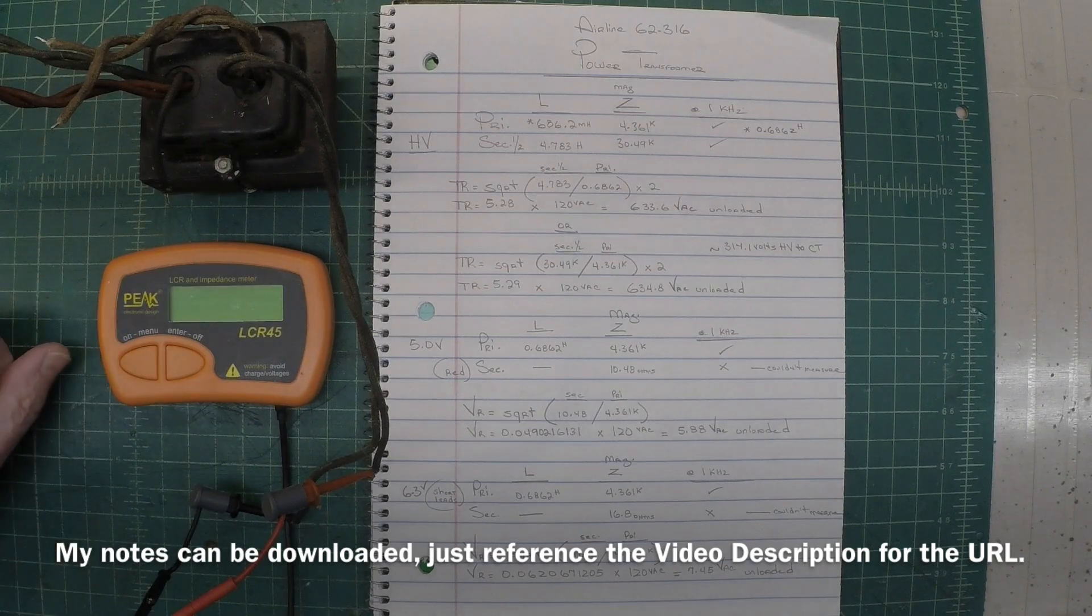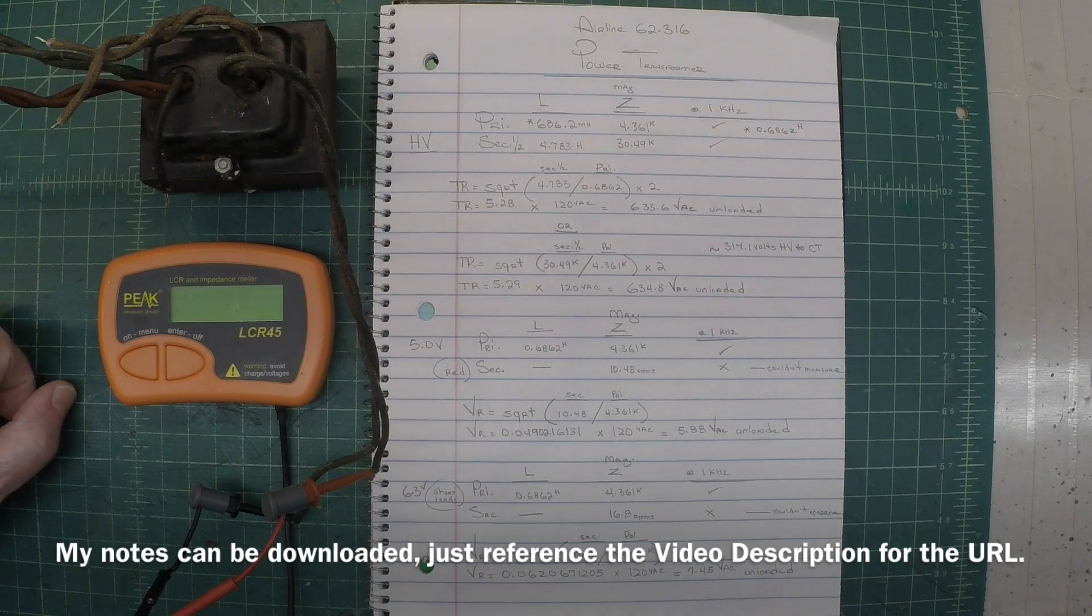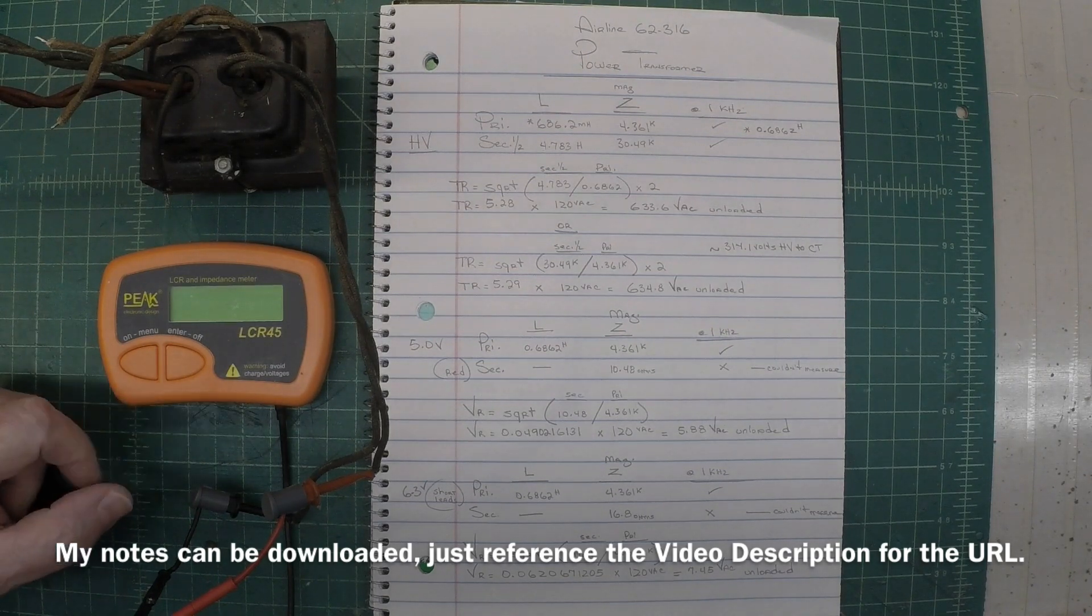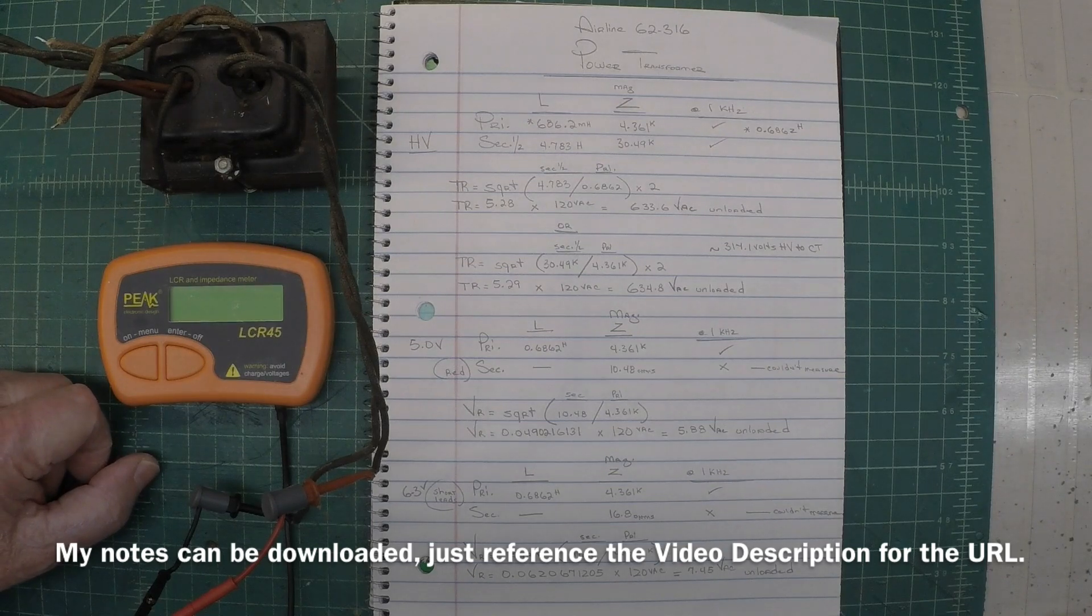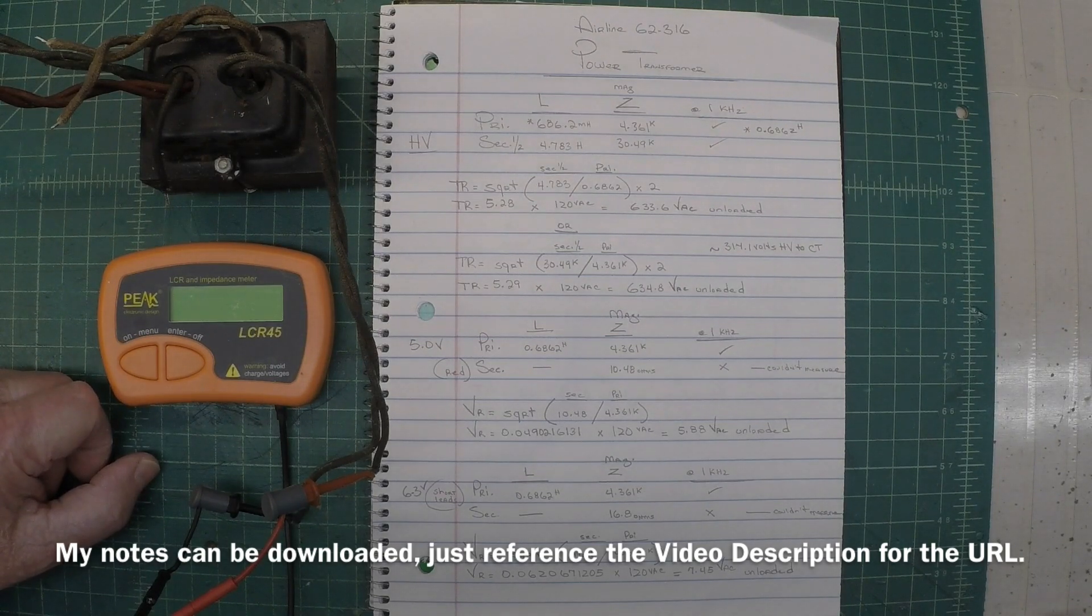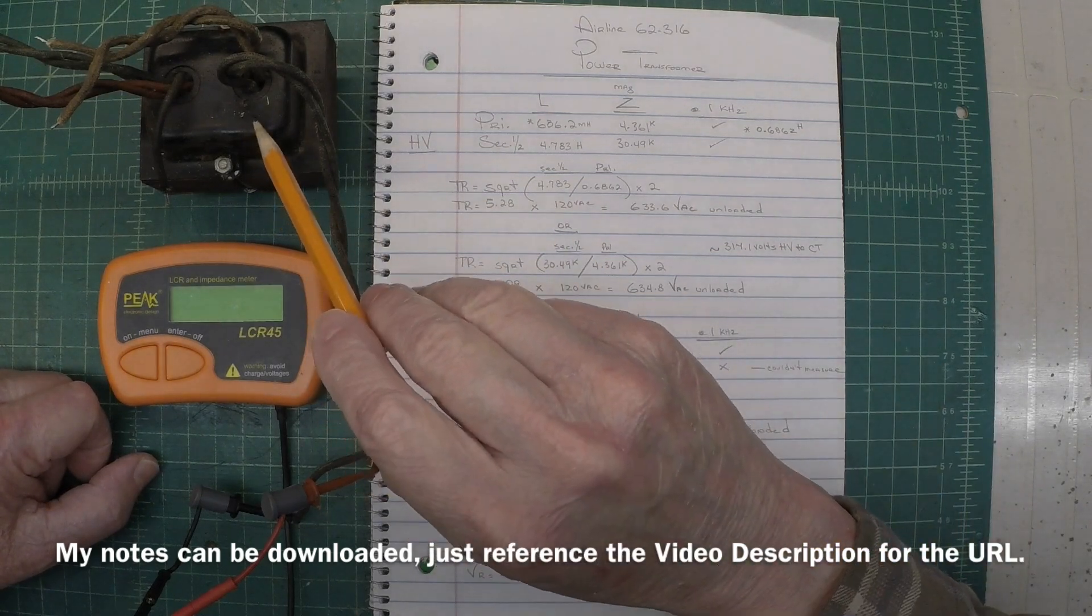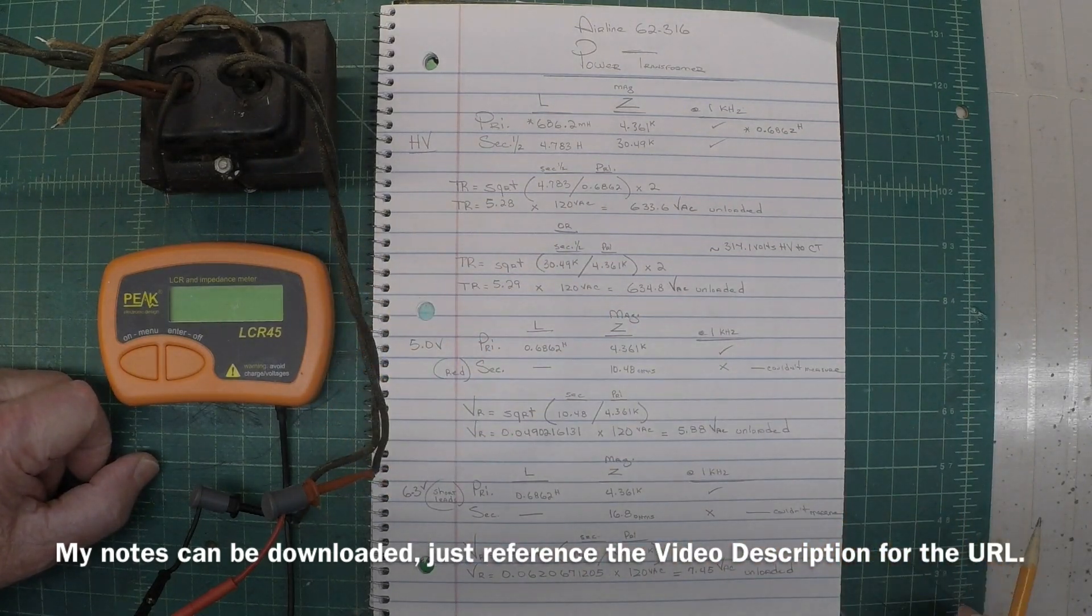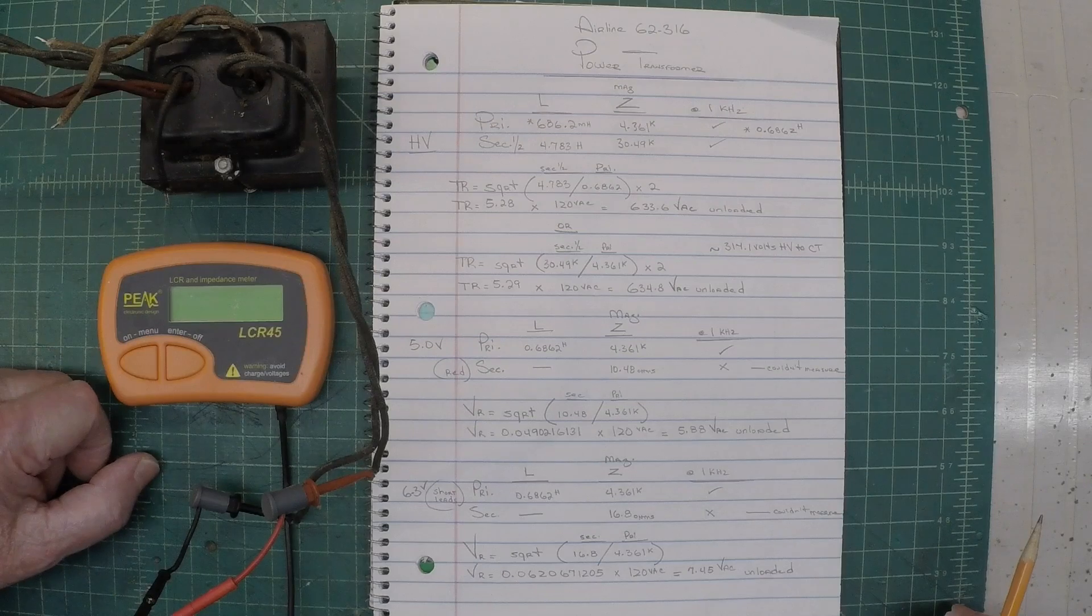I'll show you another feature on the Peak LCR meter, that being the LCR 45, that you can utilize to calculate the turns ratio and the voltage ratio, and back into what the estimated voltage would be of the power transformer unloaded.